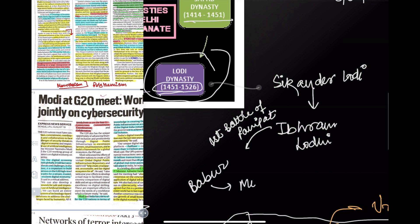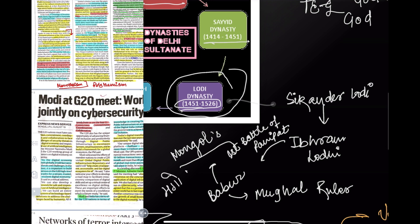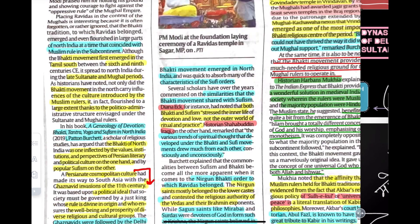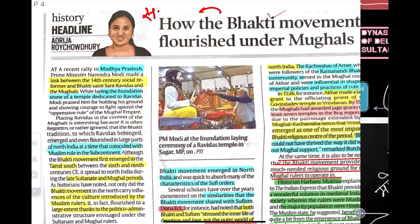Who was Babur? Babur was a Mongol-connected ruler who came from Central Asia. His mother had a Mongol lineage — related to Chagatai Khan or Timur. After Babur came Humayun, and then Akbar. The Bhakti Movement was divided into two parts: Saguna Bhakti and Nirguna Bhakti.